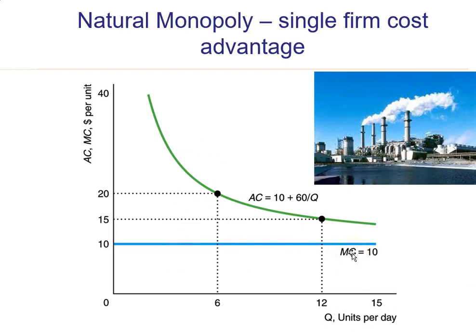For example, suppose you need 12 units produced. A single firm could do so at an average cost of 15, whereas if you had two firms each sharing the 12 units — each making 6 — you'd have a higher average cost of 20. Consumers would pay 20 with two firms, but a natural monopolist producing all 12 units could price at 15 and still break even. This is why the government carves out markets and allows natural monopolies to occur with declining average cost.